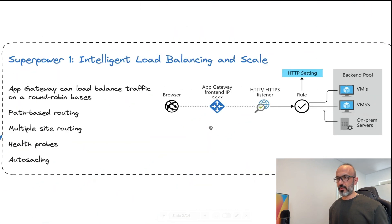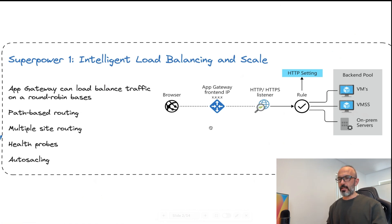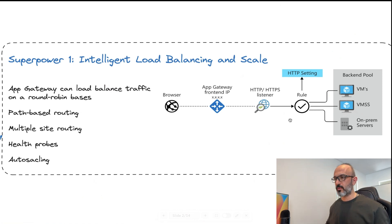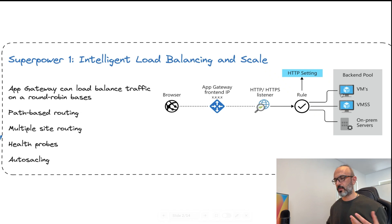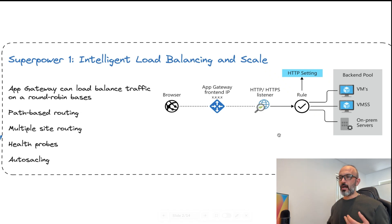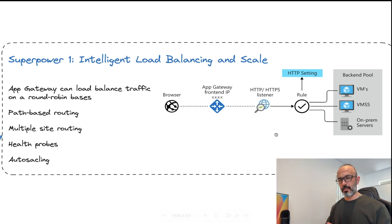Let's explore the power of Azure Application Gateway and why I think it's a superhero. The first power is what we call intelligent load balancing and scaling. The basic functionality is the ability to load balance traffic between your backend pool of services — virtual machines, virtual machine scale sets, or on-premises servers. The basic load balancing mechanism is round-robin: the first request goes to the first VM, the second to the second, and so on. But this is just scratching the surface — there is a lot more intelligent routing that we'll explore.